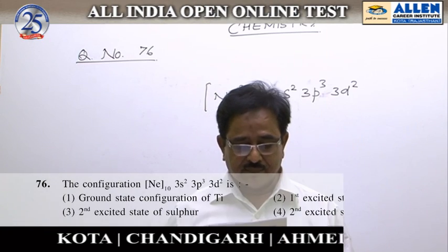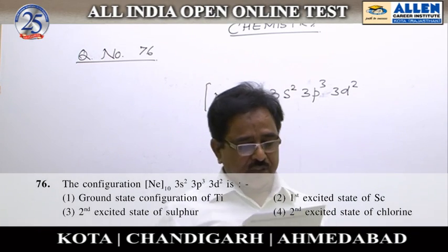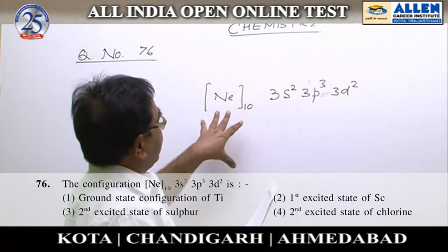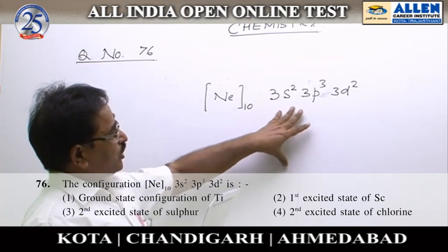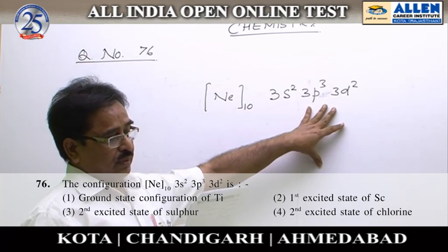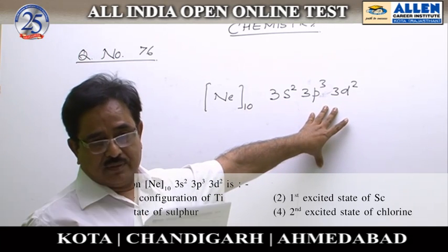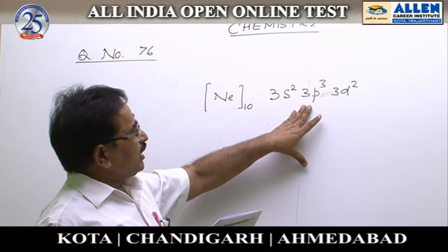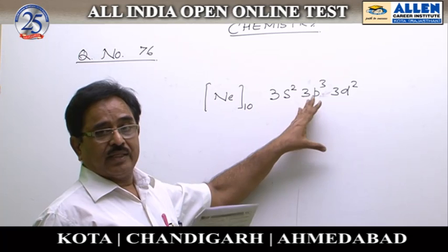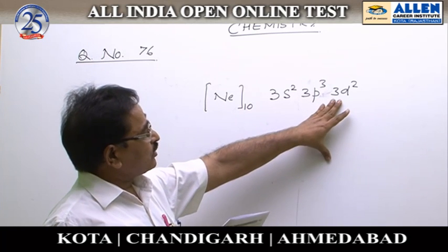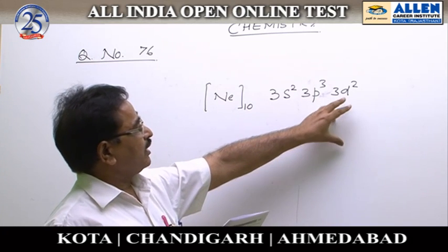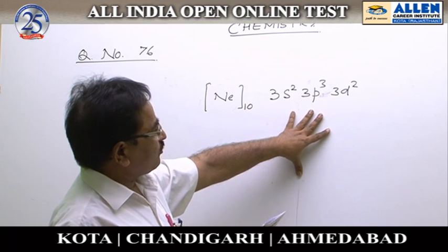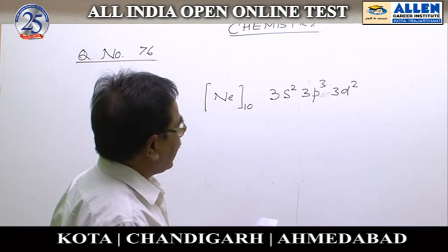Question number 76. The configuration written as NE10 3S2 3P3 3D2 is an excited state configuration, because according to Hund's rule, 3P is incomplete. When 3P is fully filled, an electron gets excited into the higher energy level D. So it is an excited state configuration of a particular element.